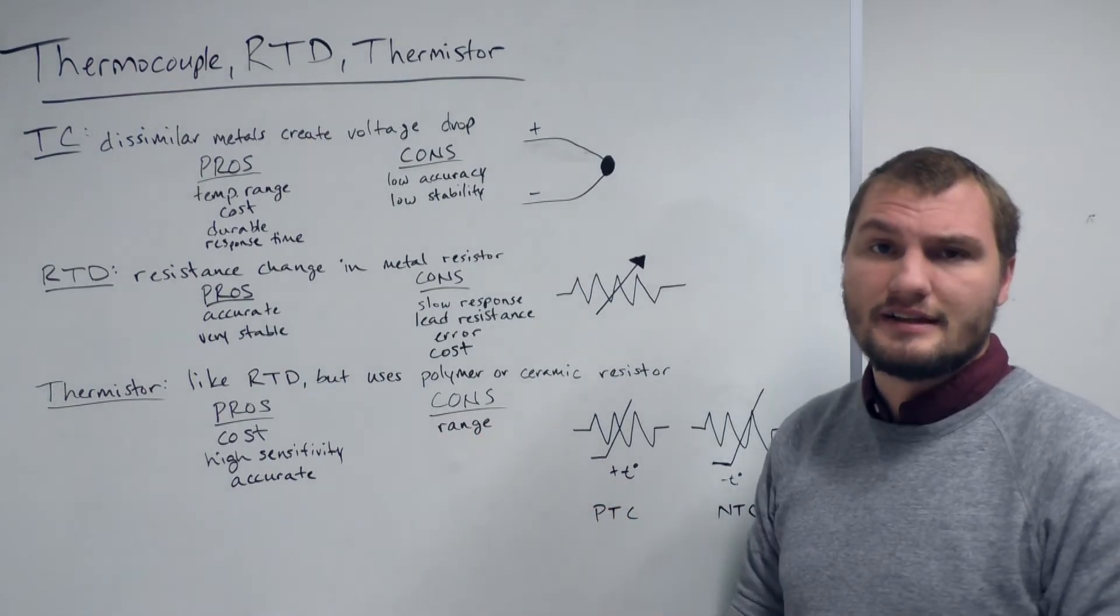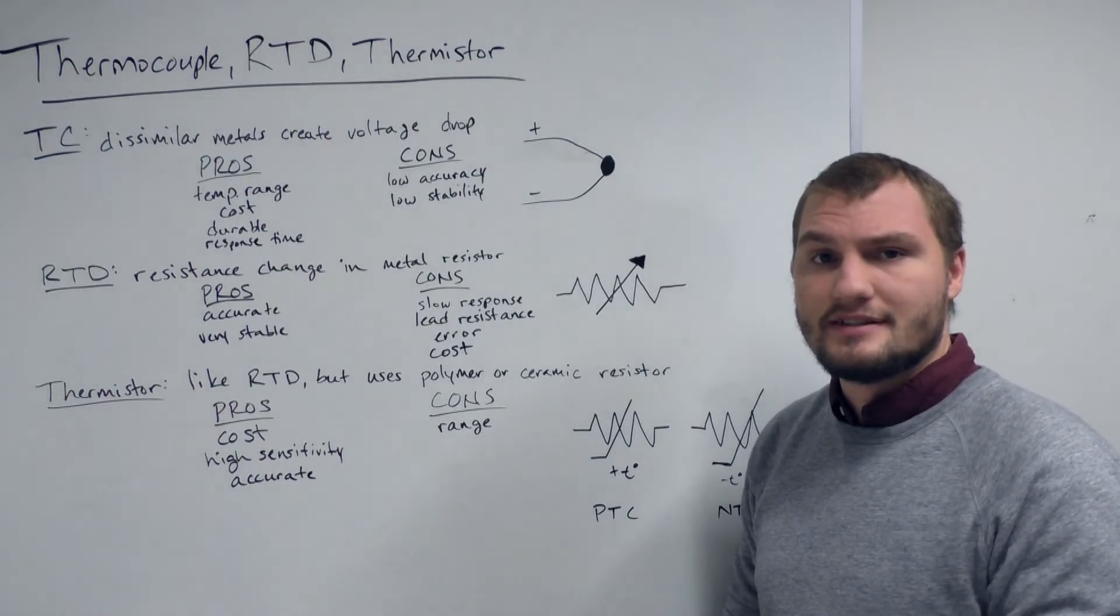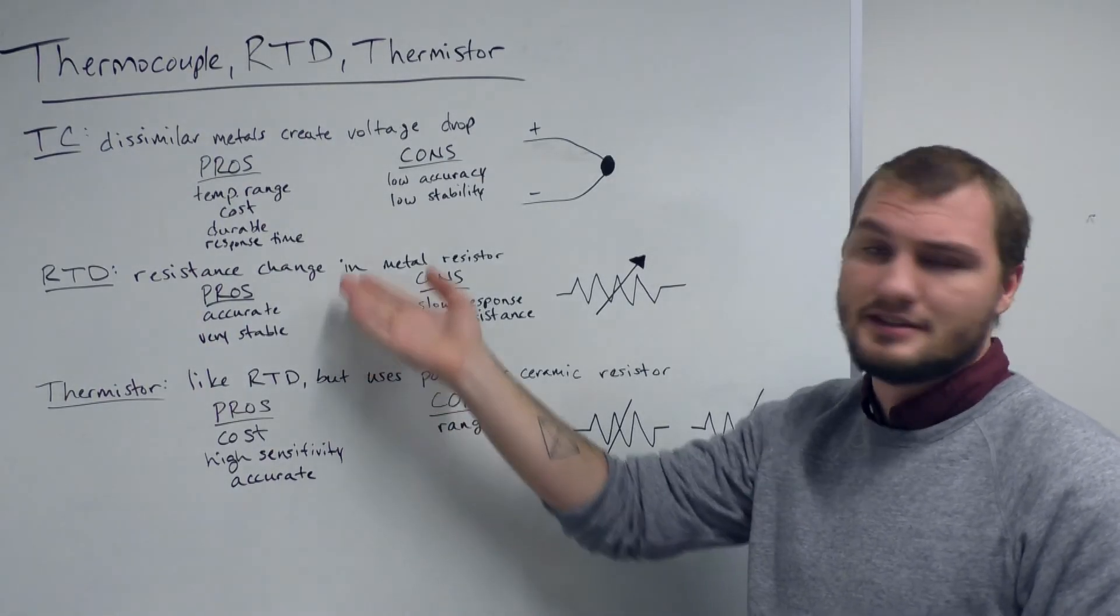However, they tend to have a very low range of temperatures available, usually up to about 150 degrees C. Anything higher than that, you'll have to go to an RTD or a TC.